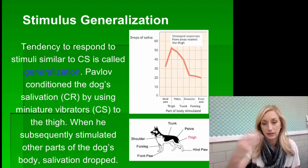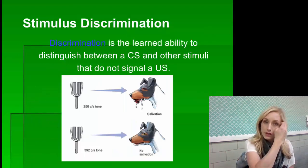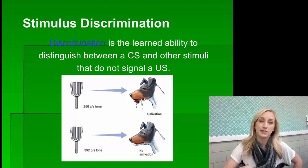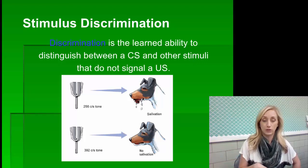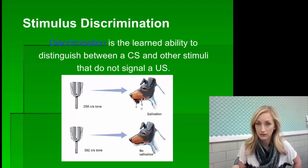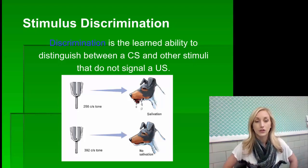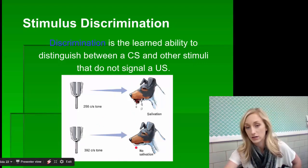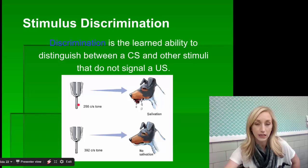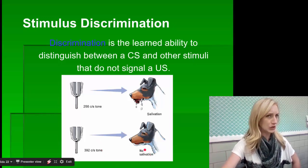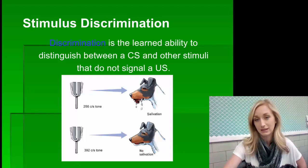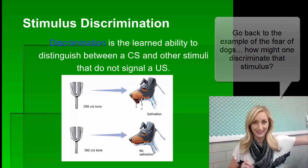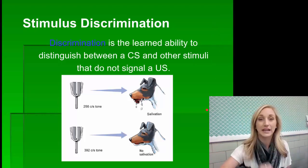With Pavlov's dogs, they did not really generalize because they only salivated when he stimulated the thigh — what they did was discriminate. Stimulus discrimination is the learned ability to distinguish between a conditioned stimulus and other stimuli that do not signal an unconditioned stimulus. A certain tone causes the dog to salivate, but a different tone does not, because the dog discriminates: 'that's not the tone I've been hearing, so I won't salivate.' Similarly, if bitten by a German shepherd, I'm only afraid of German shepherds — not a St. Bernard, Chihuahua, or Poodle. I have discriminated the stimuli.